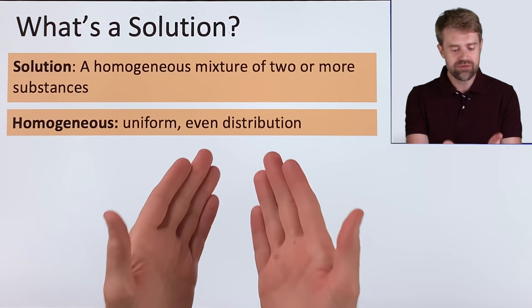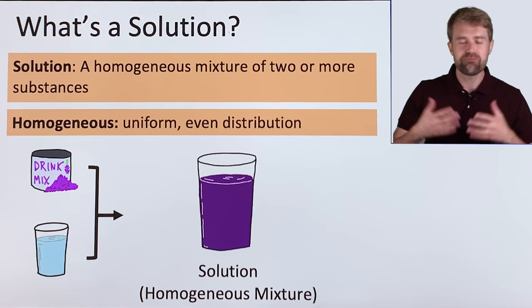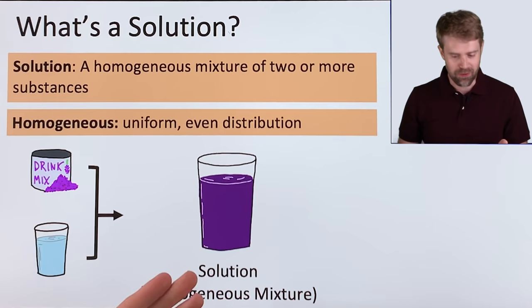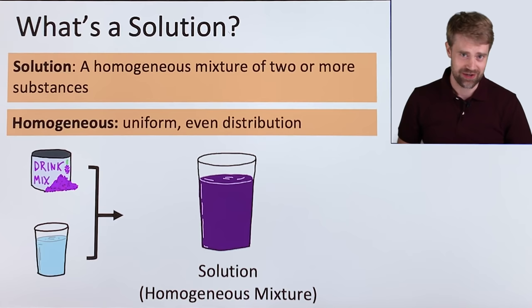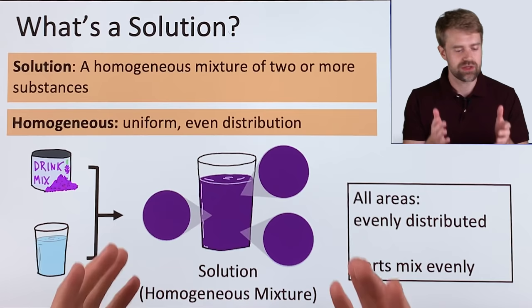Let's take a look at this. Let's say we dissolve a little drink mix in water and we stir it around. The parts mix together evenly, and we get a homogeneous mixture or a solution. Take a look at this uniform, even distribution. We can look at it here, or we can look at it here, or we can look at it here, and all areas are the same as anywhere else in the solution. Everything is evenly distributed. The parts mix evenly.